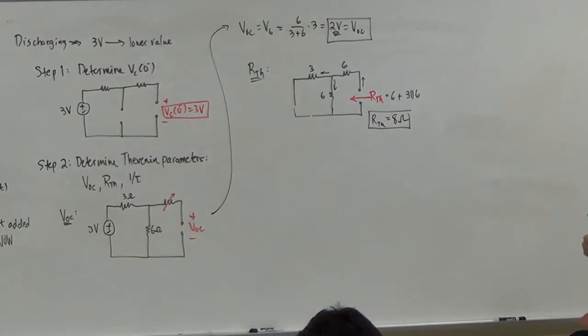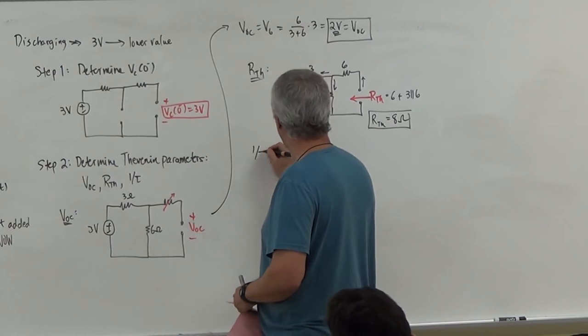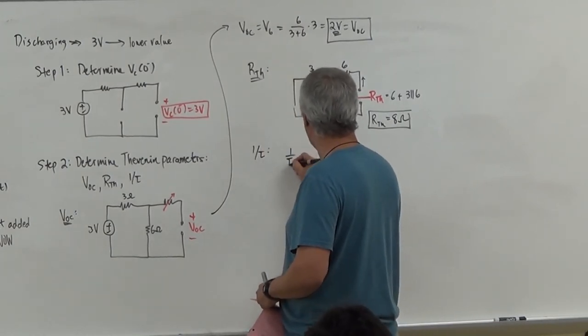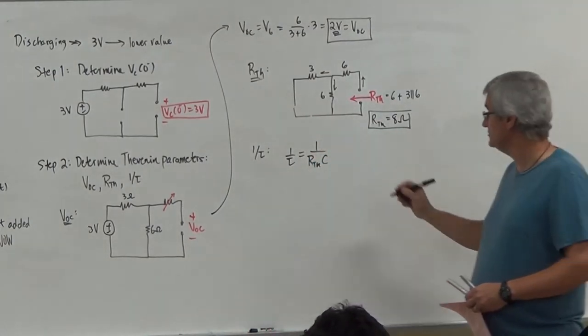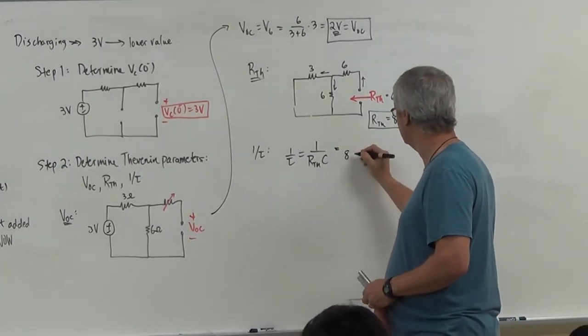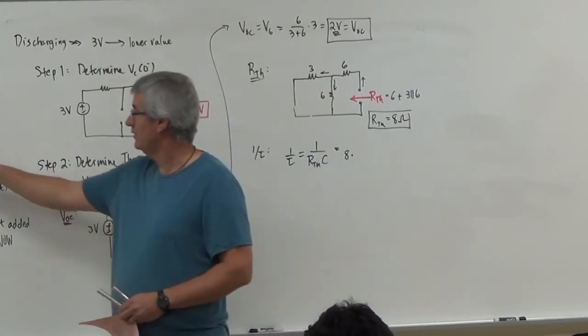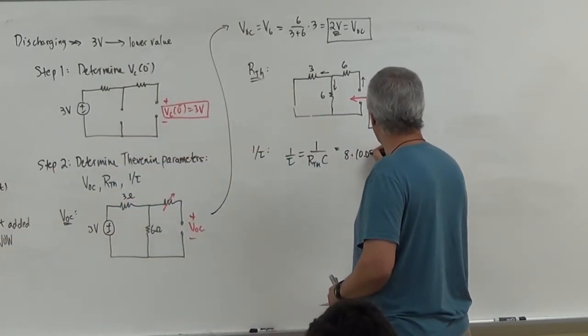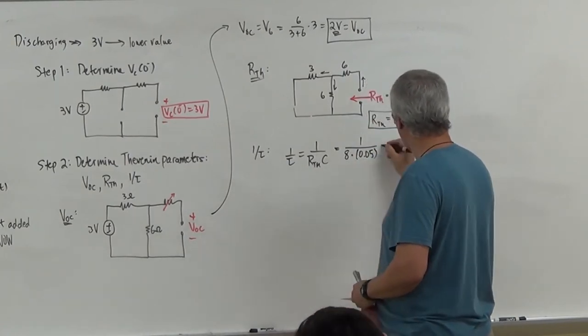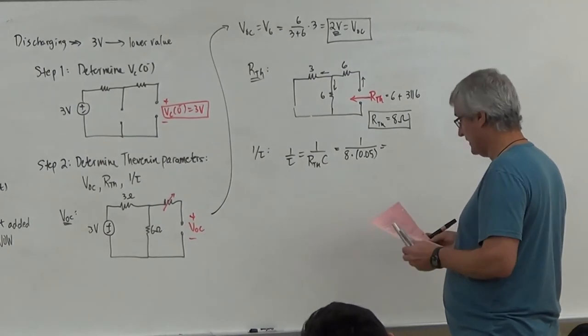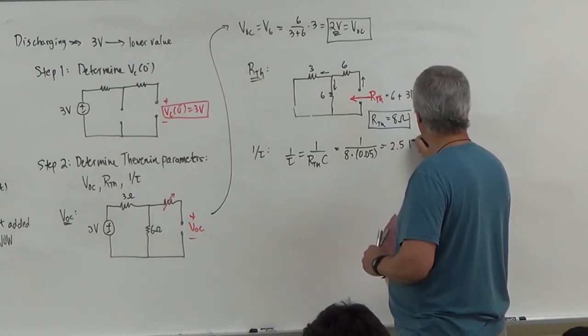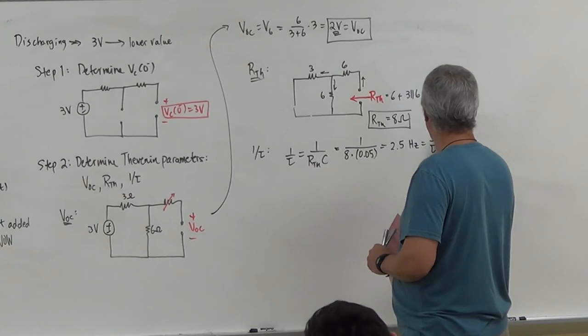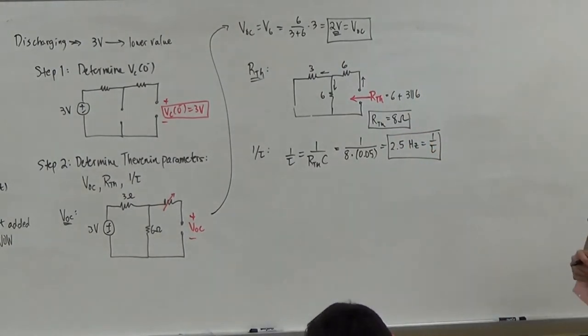Now that I've got RTH, I'm going to calculate the time constant. So now I've got 1 over tau. So now if I look at 1 over tau, that's the same as 1 over RTH times C. So this tells me here that I'm going to get 8 times the cap value. And this is going to be 0.05. And if I calculate this number, I end up getting 2.5 per second, or 1 over tau.